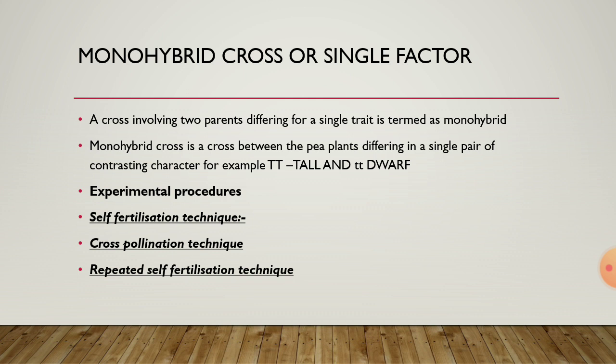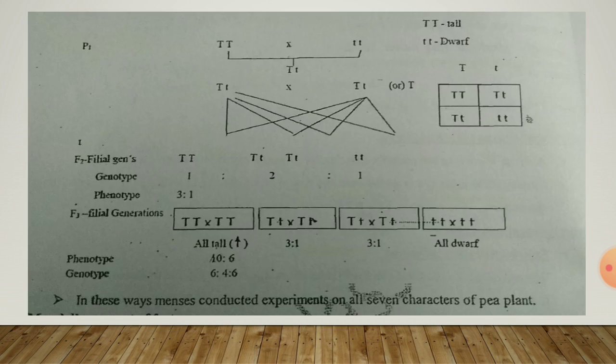He got all mature offspring were tall in character. He called them F1 generation plants. The next one is repeated self-fertilization technique. Mendel allowed the F1 generation plants to grow and undergo self-pollination. He got a number of offspring with tall and dwarf varieties. He called it F2 generation, meaning second generation. Lastly, he raised F3 generation plants by self-pollinating the F2 generation plants. He self-pollinated the dwarf plants and the result was dwarf offspring. He self-pollinated some tall offspring and the result was tall offspring, and self-pollinating all remaining tall plants resulted in tall plants and dwarf plants.